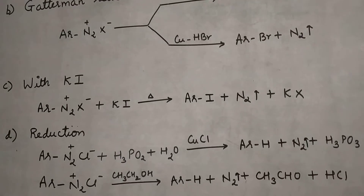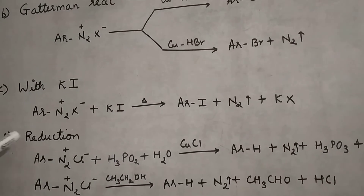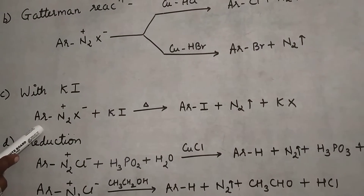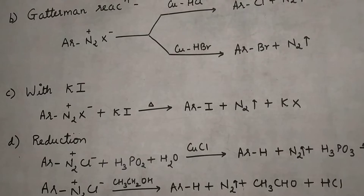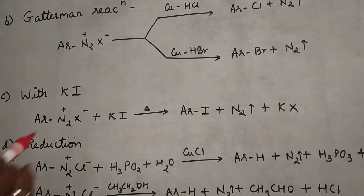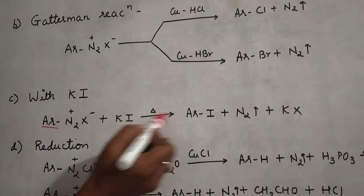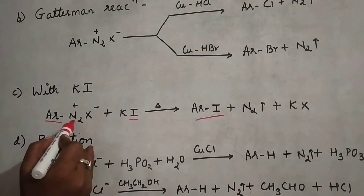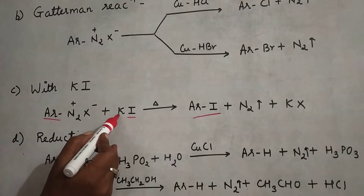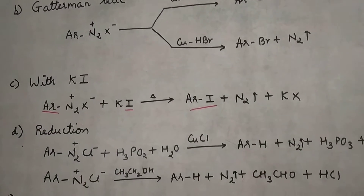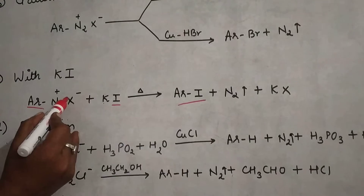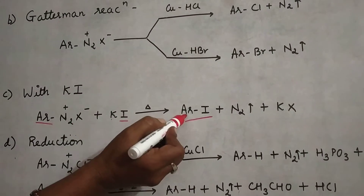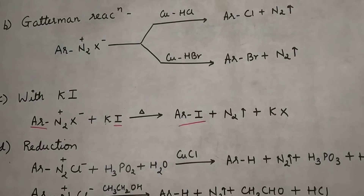Next is the reaction with KI. When the arene diazonium salt reacts with KI, there is formation of ArI — aryl iodide — as the main product. Nitrogen is liberated out, and KX is the byproduct. So all aryl halides can be formed through these reactions, with the aromatic ring bonded to a halogen.